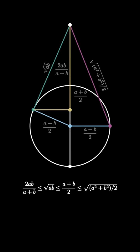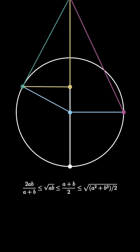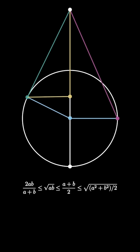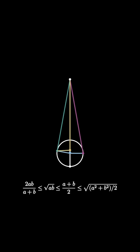Any choice of non-negative real numbers a and b leads to a similar diagram, except in the case when a equals b, then all the line segments collapse to the same so we have equality throughout if and only if a equals b.